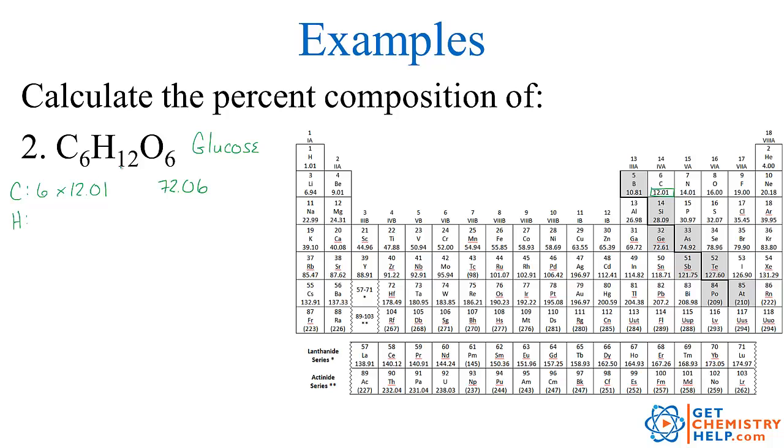For hydrogen, I have 12 hydrogens, those have a mass of 1.01, so 12 times 1.01, that's a total mass of 12.12. And then for oxygen, I have 6 of those, and those have a mass of 16.00, which is a total of 96.00. So we add those together, and the total mass of our compound comes out to be 180.18.